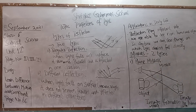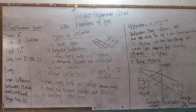When we look at ourselves in a mirror, the image is laterally inverted — that is, the left side appears on the right side and the right side appears on the left side. For example, if you raise your right hand, the image in the mirror appears to raise its left hand. So the image is inverted laterally.